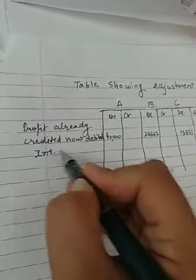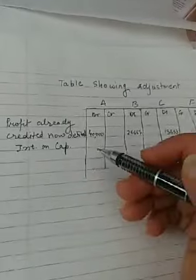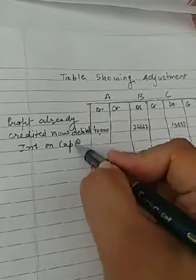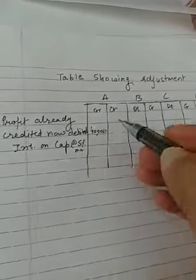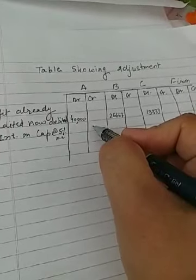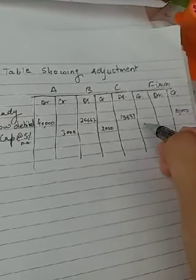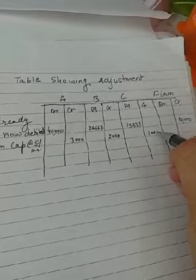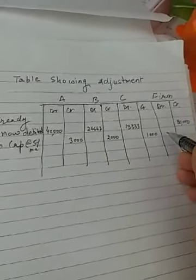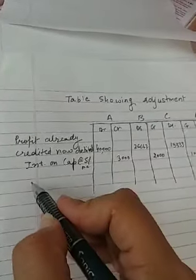Interest on capital: question mein given hai — A ki capital 60,000 hai aur interest on capital 5% ki rate se provide karna hai. Capital pe interest partners ke capital account mein credit hota hai. Toh A ka 60,000 ka 5% = 3,000 credit; B ka 40,000 ka 5% = 2,000 credit; C ka 20,000 ka 5% = 1,000 credit. Firm ke account mein yeh debit ho jaayega: 3,000 + 2,000 + 1,000 = 6,000.